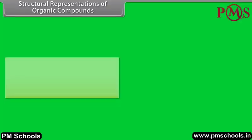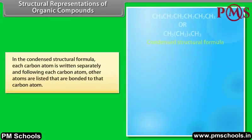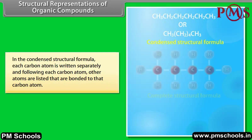Structural representations of organic compounds. In the condensed structural formula, each carbon atom is written separately, and following each carbon atom, the other atoms that are bonded to that carbon atom are listed.